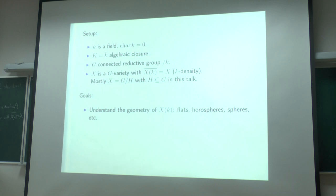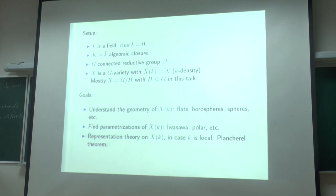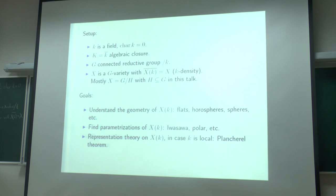The goal is to understand the geometry of the k-rational points, thinking of flats, horospheres, spheres, and so on. One would also like to parametrize X(k) — something like Iwasawa decomposition, polar decompositions, and so on. This is joint work with Bernhard Krötz, and for him k should be ℝ. The ultimate goal is to find the Plancherel theorem for the G(k) action on L² functions on X(k), where k is ideally a local field.